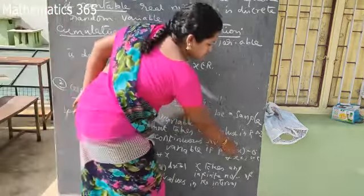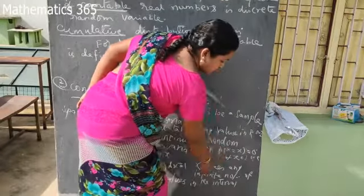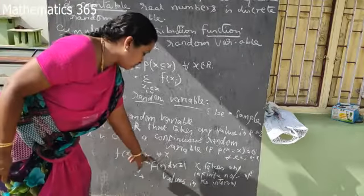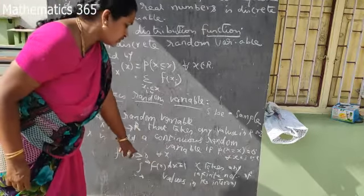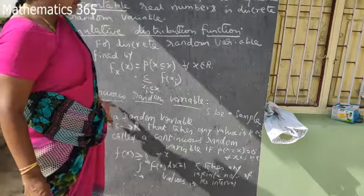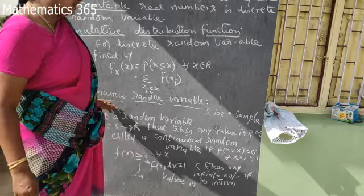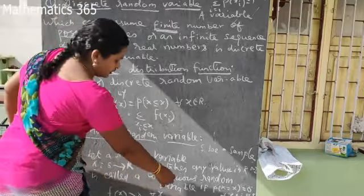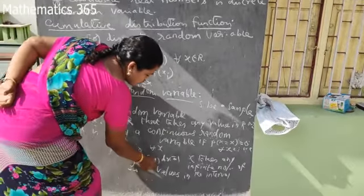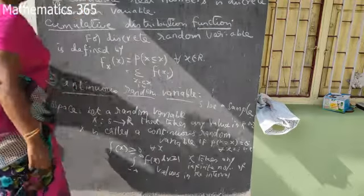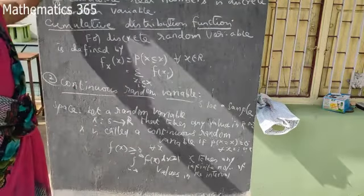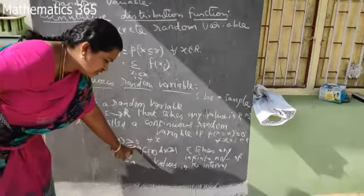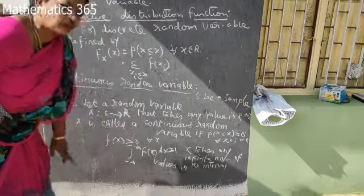For a continuous random variable, P of X equal to small x equals 0 for every x belonging to R. The probability density function f of x must satisfy f of x greater than or equal to 0 for every x, and the integral from minus infinity to infinity of f of x dx is equal to 1.